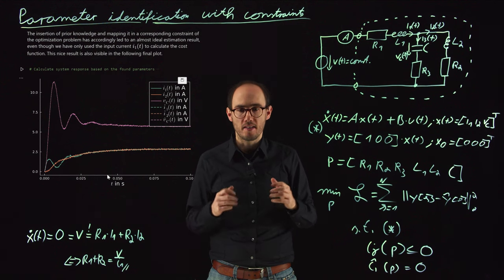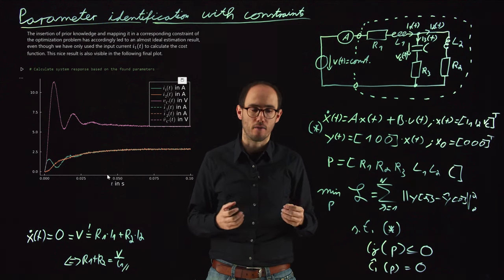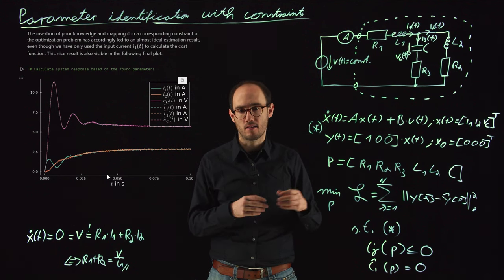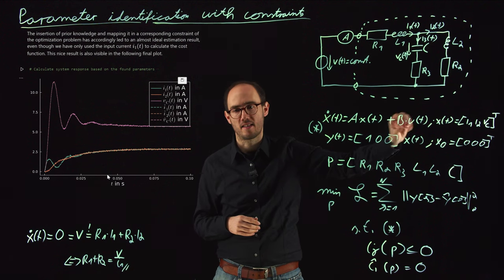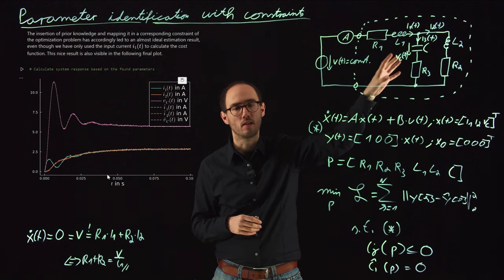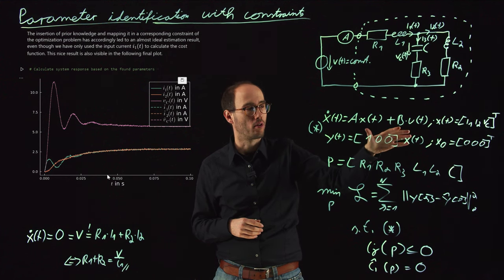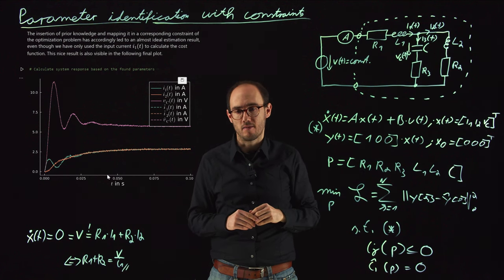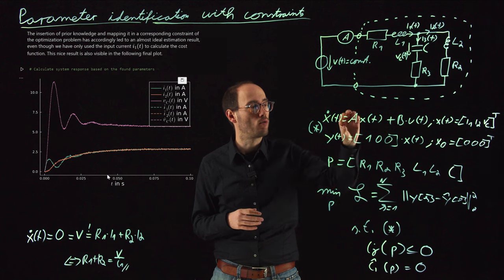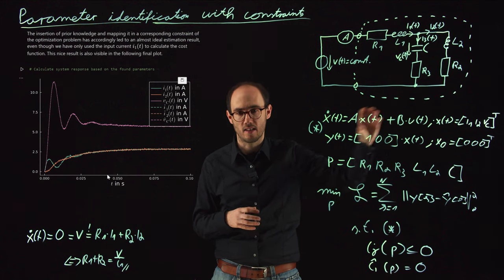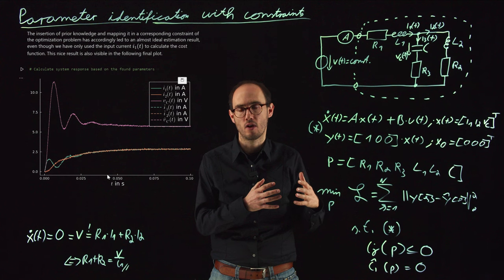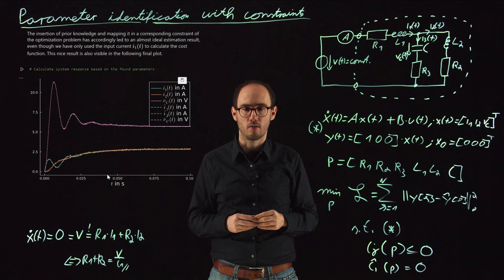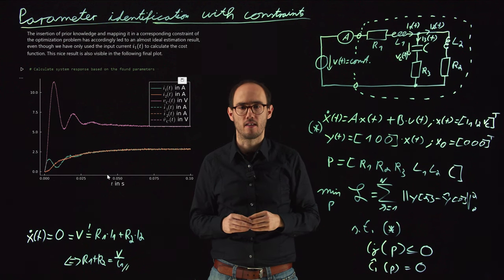In summary, adding constraints to a data-driven system identification process helps in two ways: first, it prevents the optimization or ODE solver from becoming unstable; second, it ensures physically meaningful results. The pre-knowledge used here corresponds to first-semester electrical engineering knowledge — very accessible. Future videos will explore cases where we do not know the topology of the model's right-hand side ODE, extending to even more limited prior knowledge scenarios.